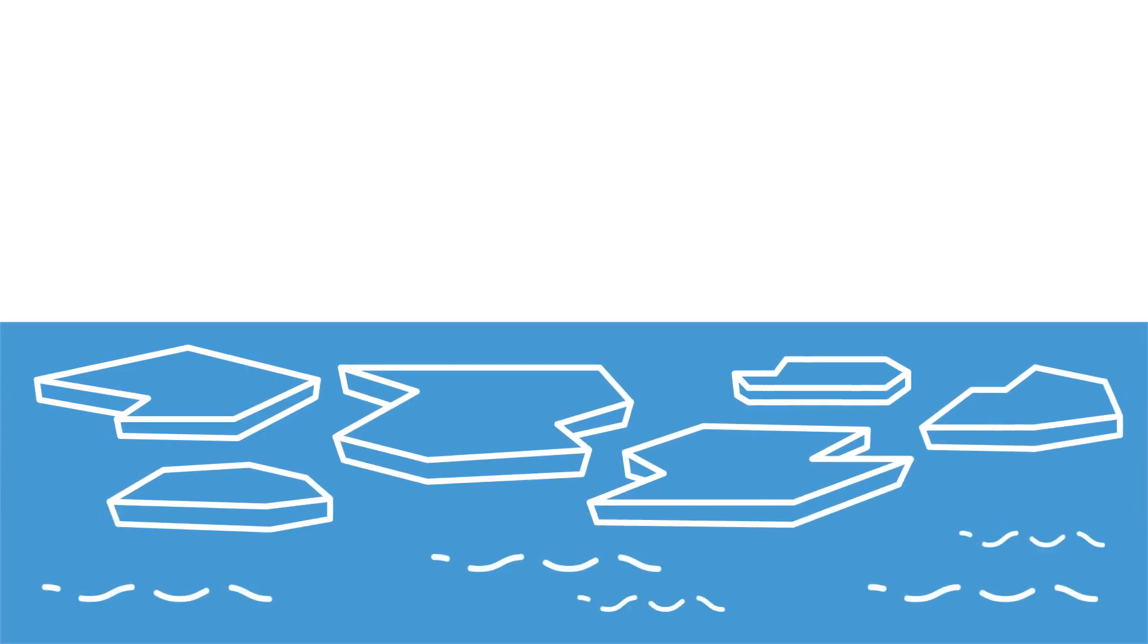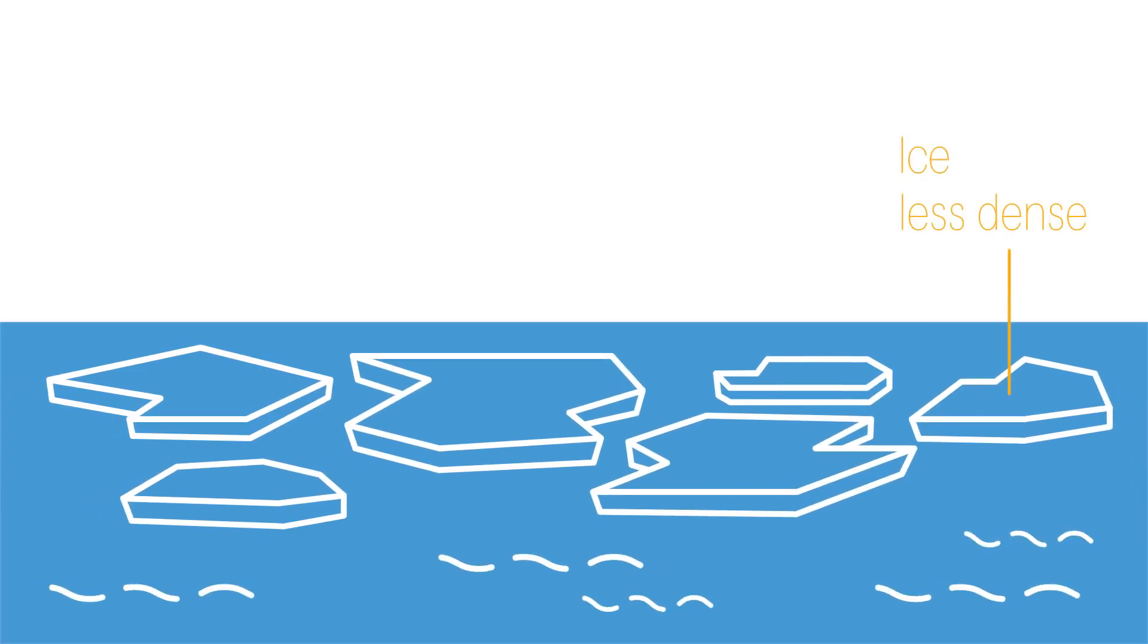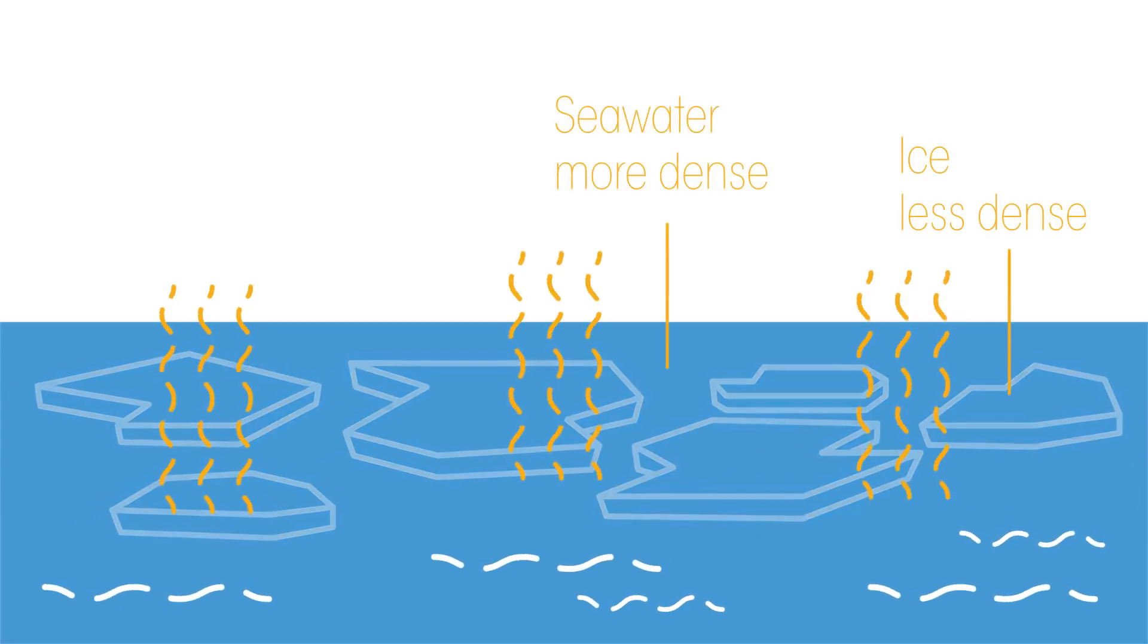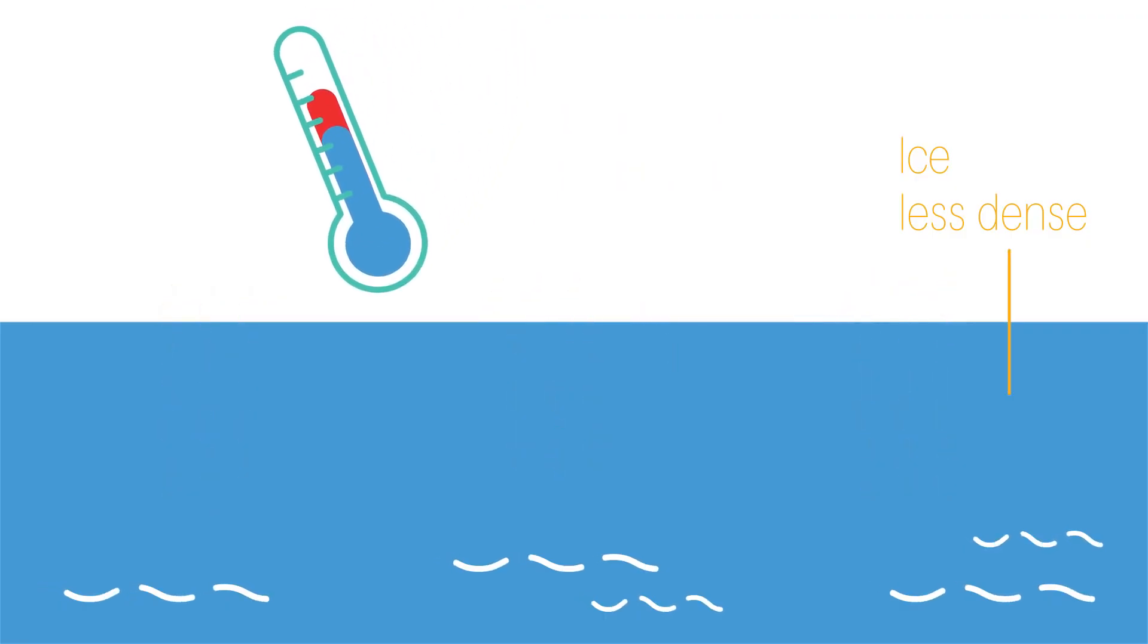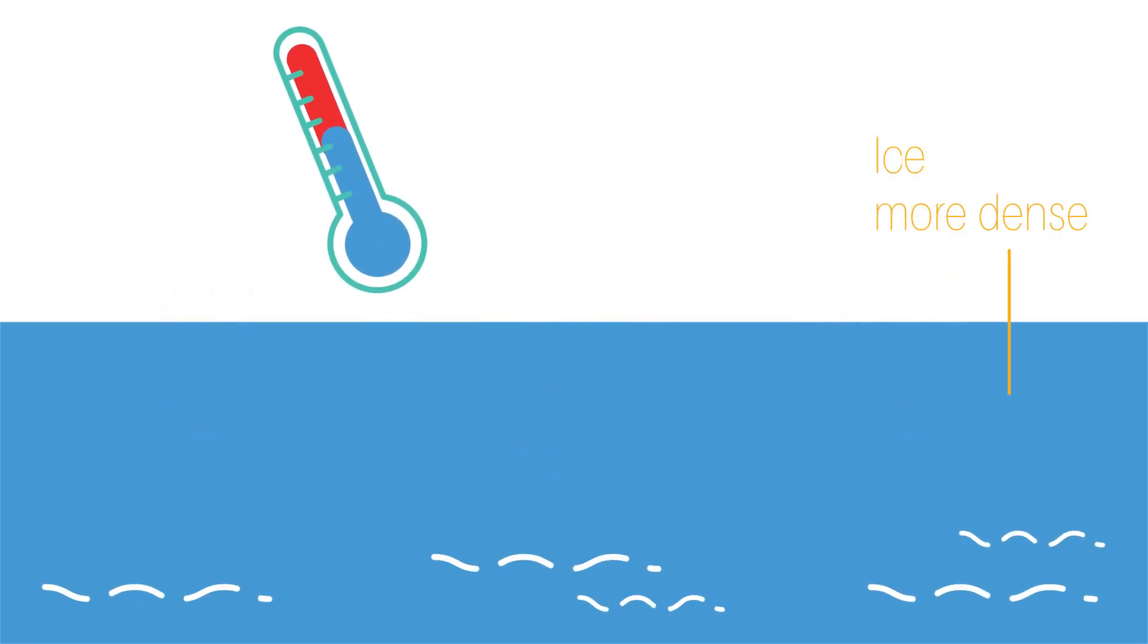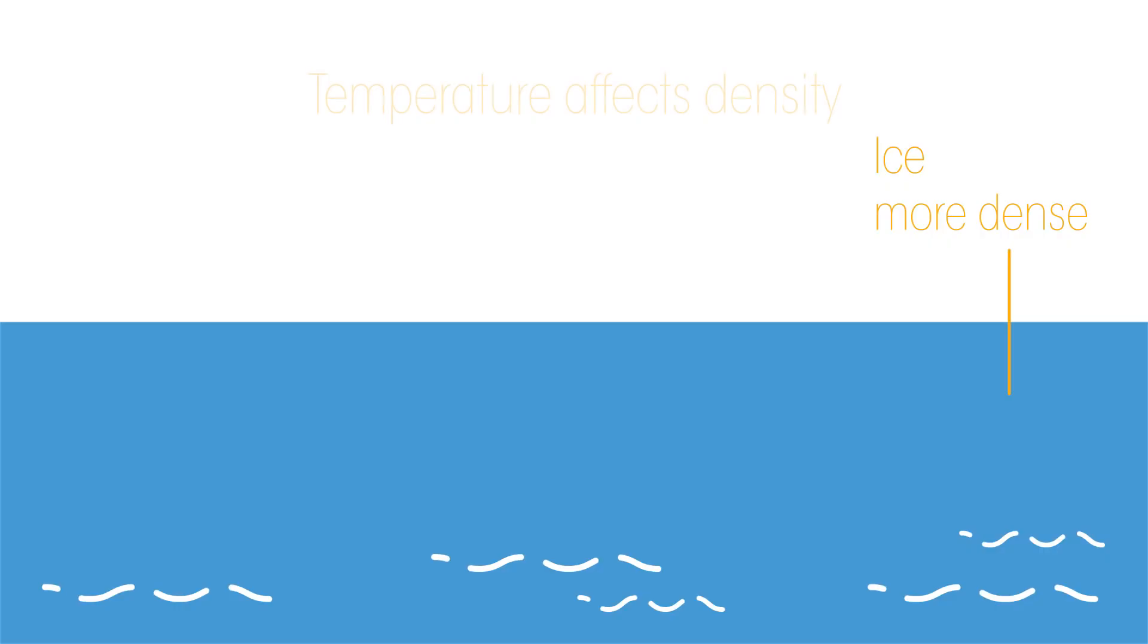A final thought. Think of icebergs. They float on water, so solid ice is less dense than liquid seawater. When the ice melts, so it changes temperature, it becomes more dense, and so mixes with the seawater. This means that temperature does affect density.